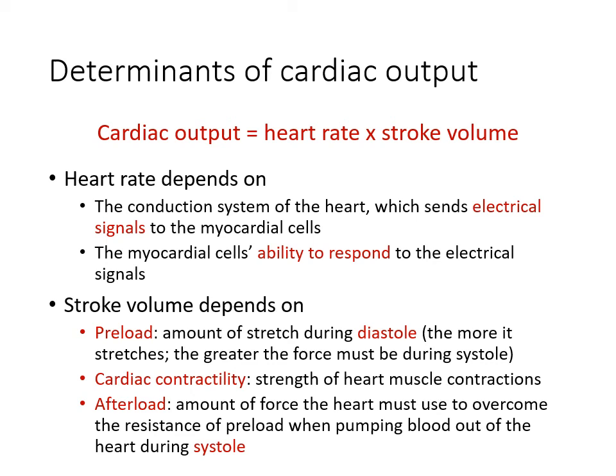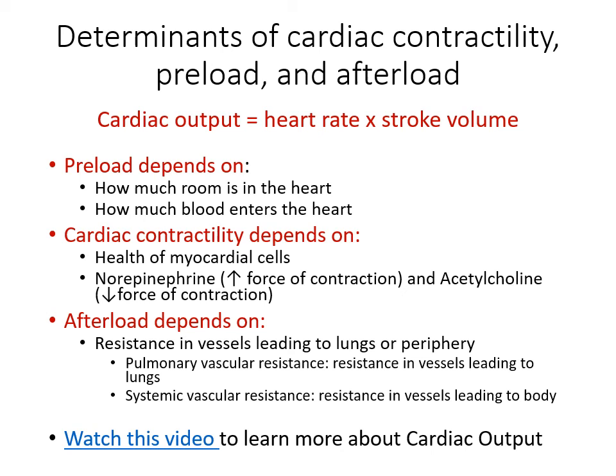The determinants of stroke volume also depend on several factors. Preload depends on how much space is inside the heart chambers to accept blood. A problem decreasing chamber size will decrease the amount of blood able to enter. It also depends on how much blood enters the heart in the first place — chamber size could be normal, but the amount of blood entering could be decreased or increased for several reasons.